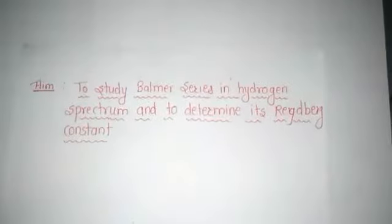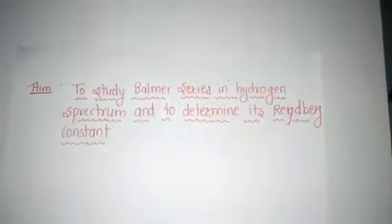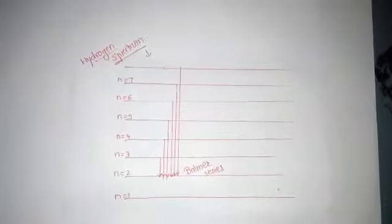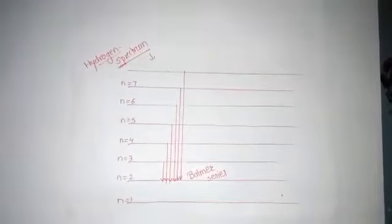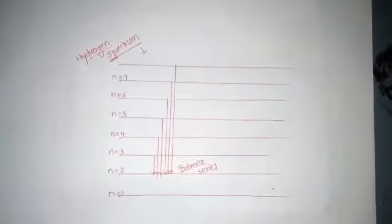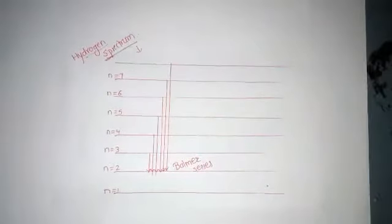But before that, we have to understand what is the Balmer series and the Rydberg constant. The Balmer series, or Balmer lines, in atomic physics is one of a set of six named series describing spectral line emission of the hydrogen atom. The visible spectrum of light for hydrogen displays four wavelengths: 410 nm, 434 nm, 486 nm, and 656 nm.